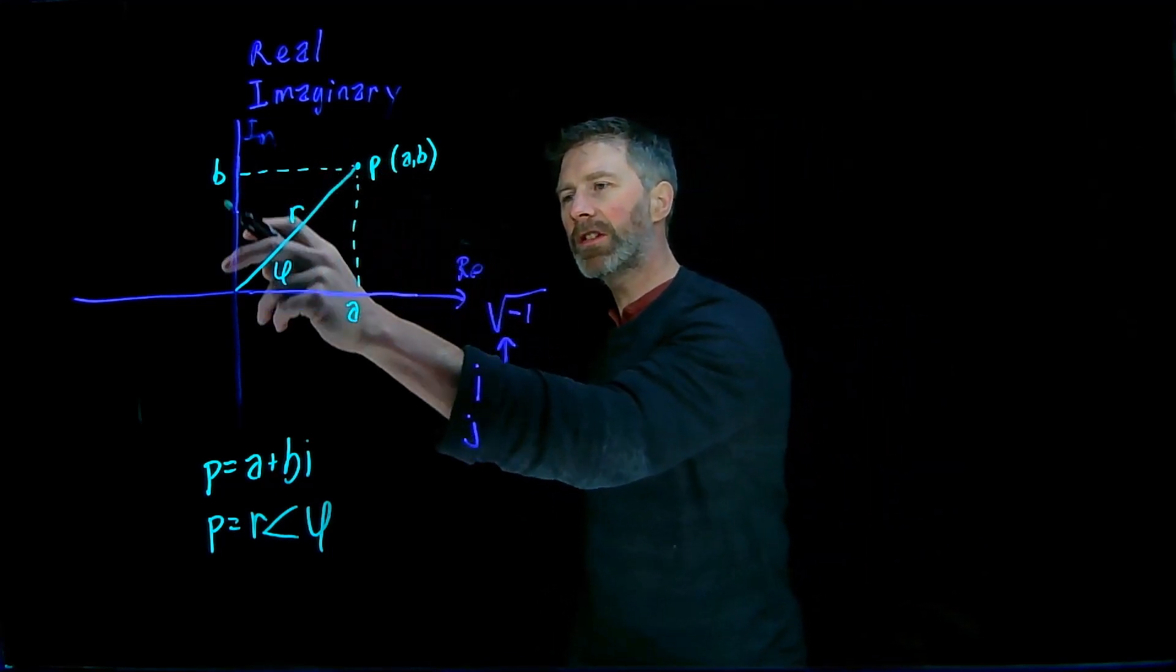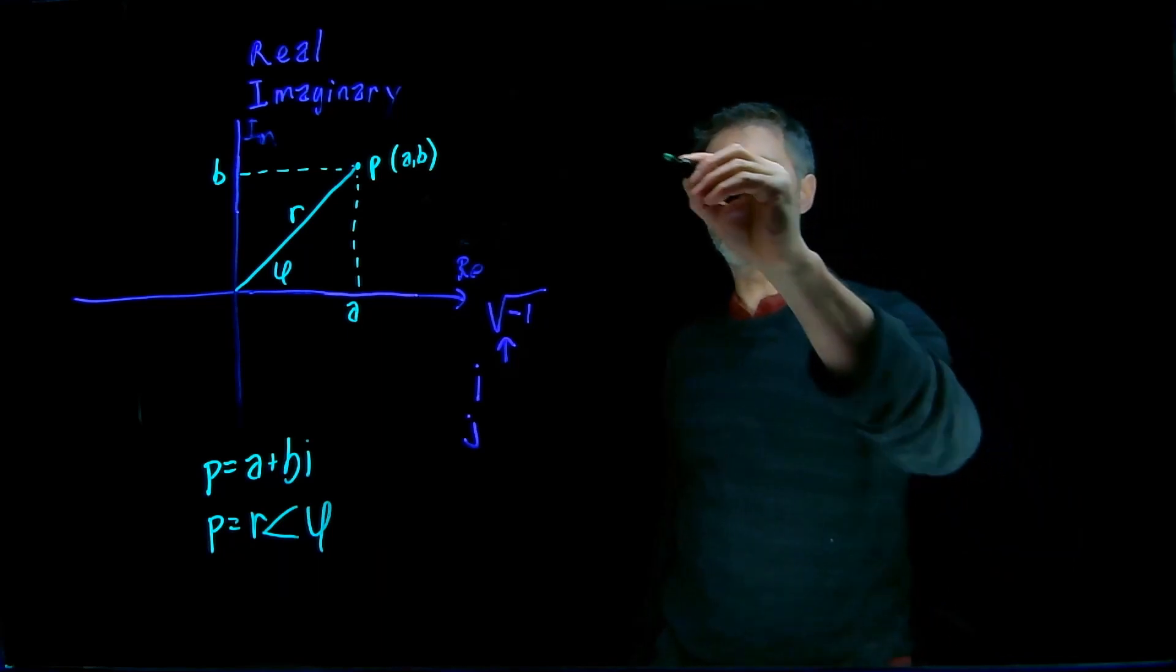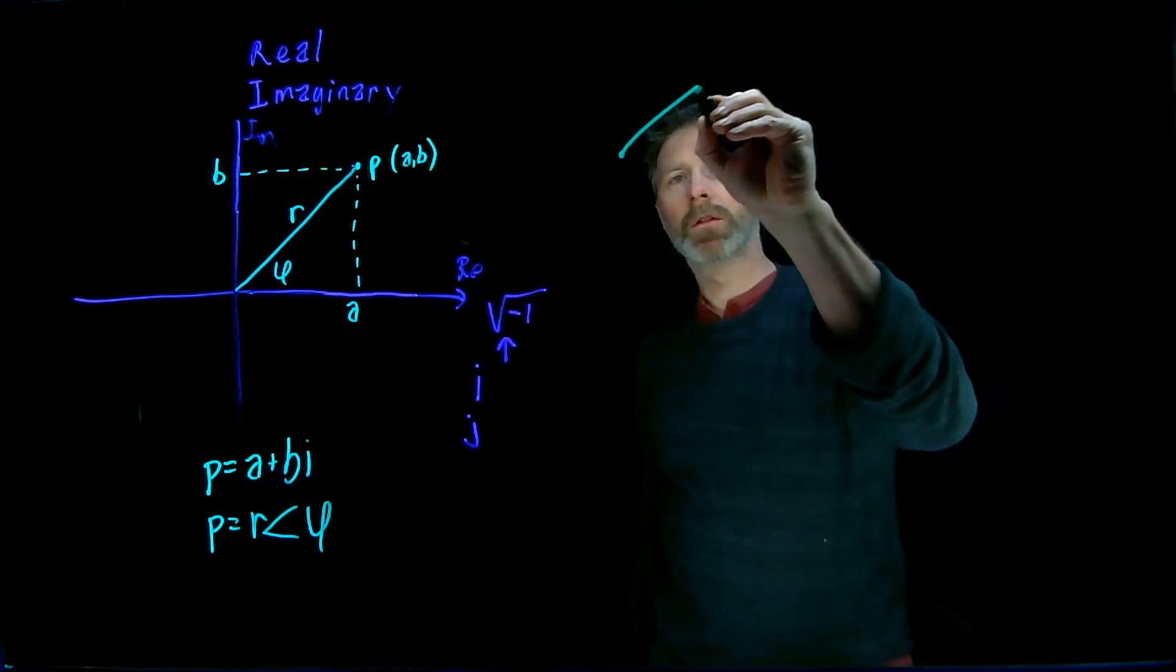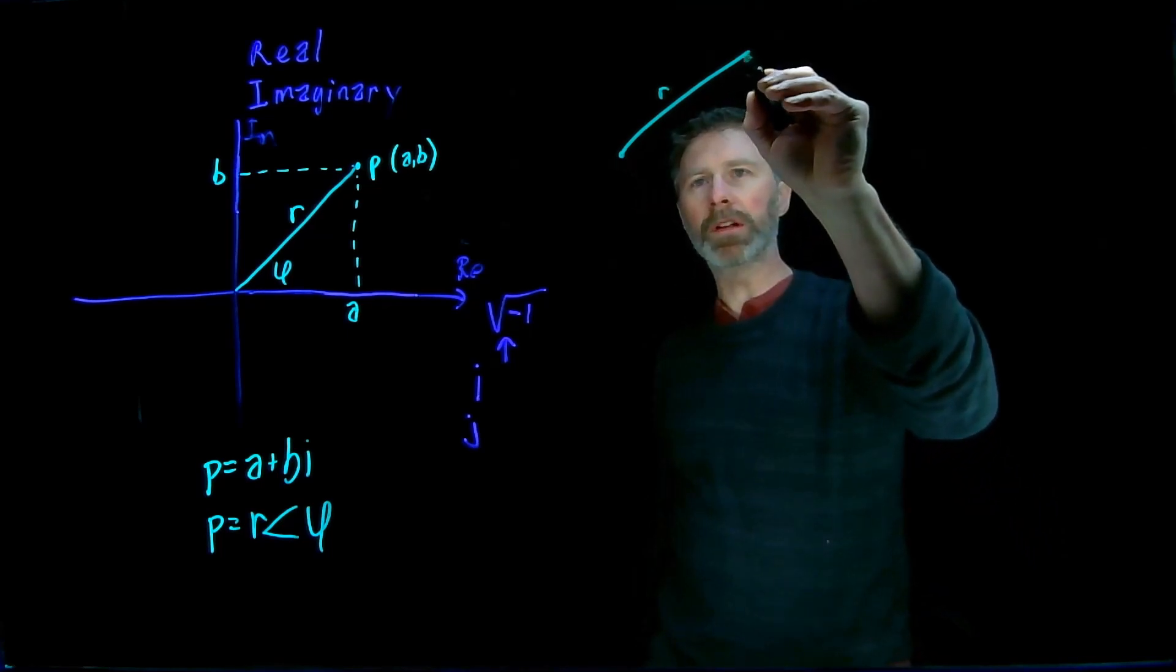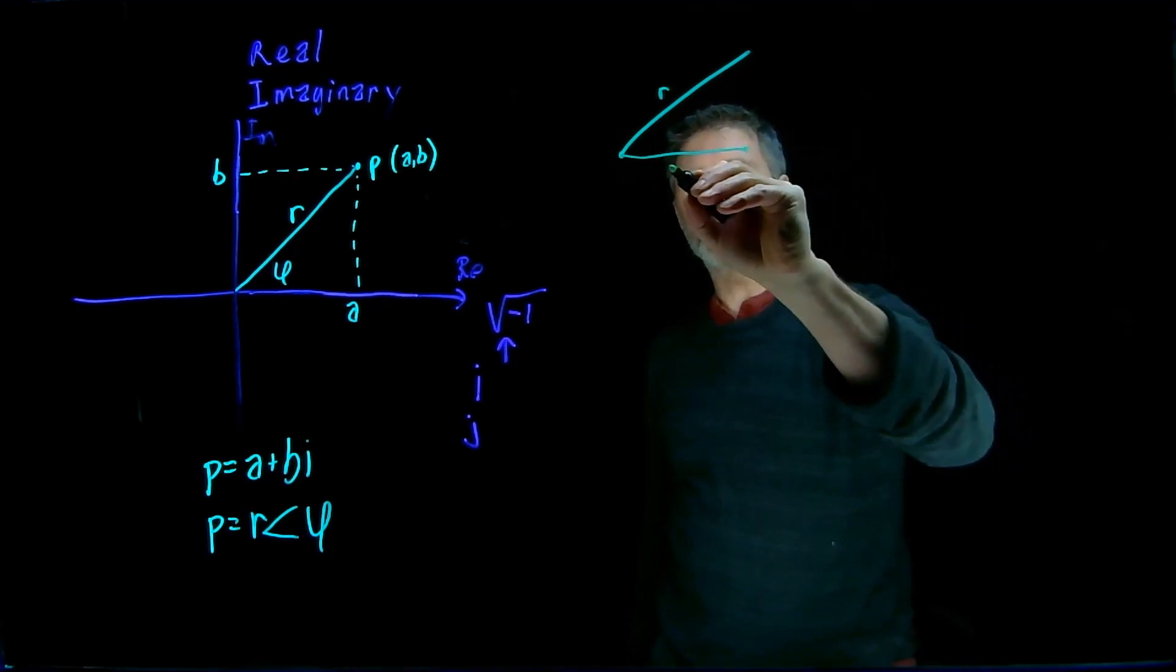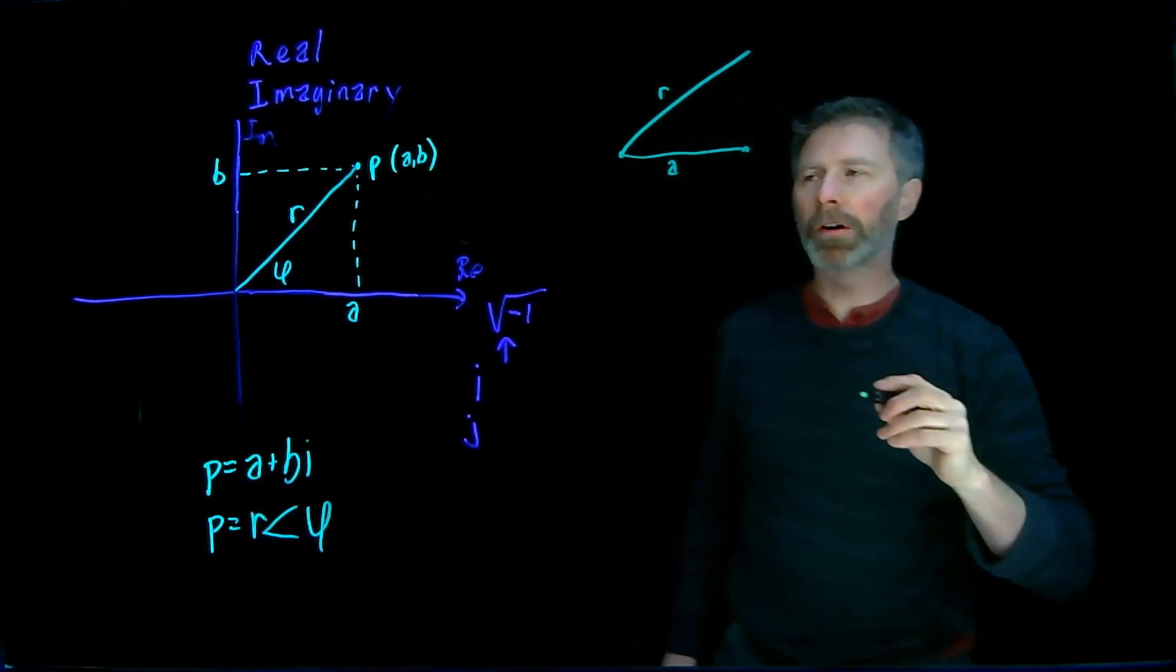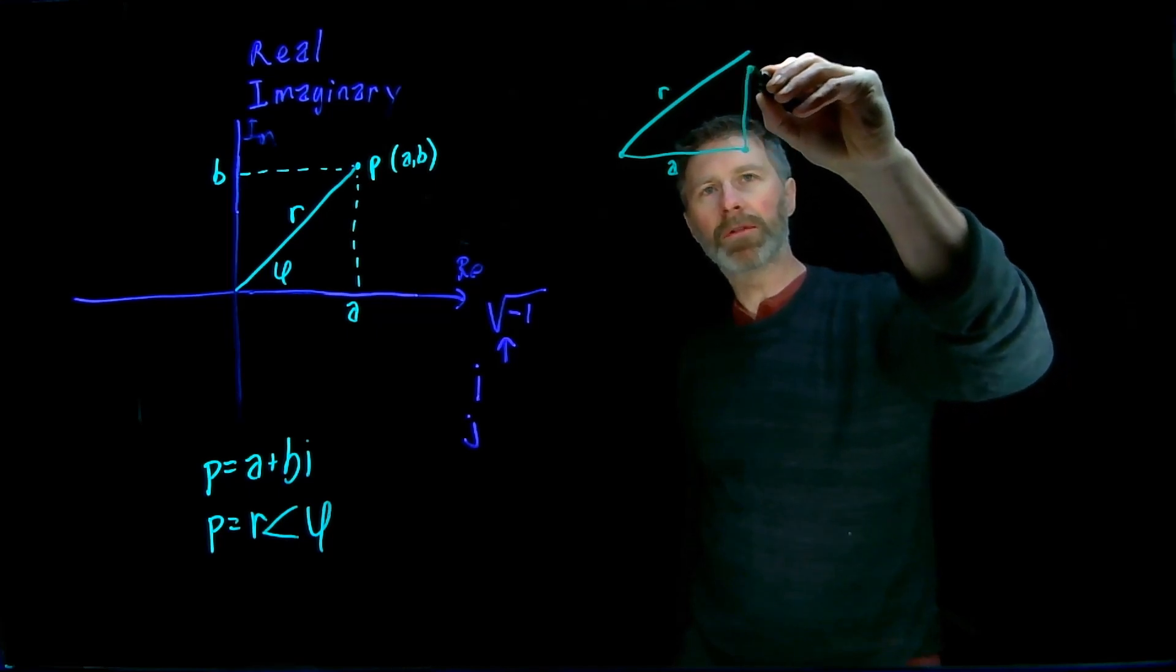So let's just take this part and redraw it, just to see where the trigonometry comes into play. Okay, so there's the R, the distance from the origin up to the point P, and then we've got this distance A, the real part of the point, and then we have this distance B.